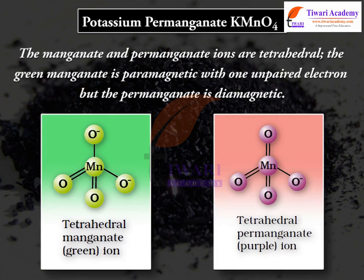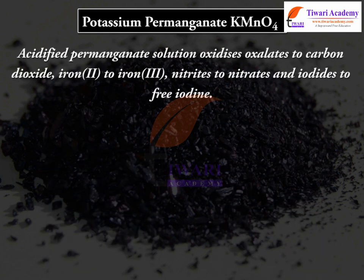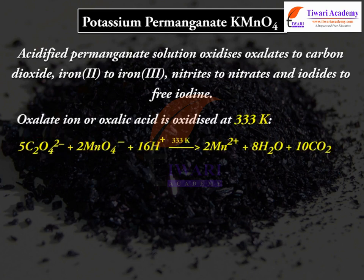The manganate and permanganate ions are tetrahedral. The green manganate is paramagnetic with one unpaired electron, but the permanganate is diamagnetic. Acidified permanganate solution oxidizes oxalates to carbon dioxide, iron(II) to iron(III), nitrites to nitrates, and iodides to free iodine. Oxalate ion is oxidized at 333 K: 5C₂O₄²⁻ + 2MnO₄⁻ + 16H⁺ → 2Mn²⁺ + 8H₂O + 10CO₂.